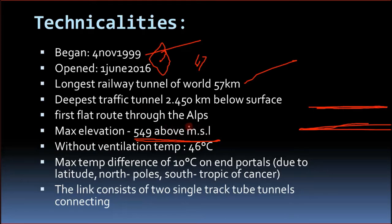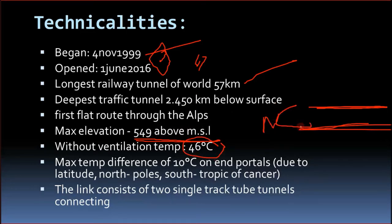The maximum elevation inside the tunnel is 549 metres above mean sea level. It is the first flat tunnel through the Alps. Due to weather differences between the north and south portals, if you travel from south to north you can experience a temperature change of around 10 degrees.